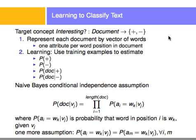The first step is we're going to represent each document as a vector of words. What we're going to do is lay out all the words in the document — all the words in all the documents that we have, all the unique words — and that's going to form a long array of words. That's what's called a vector, and each document is going to use this long array of words.